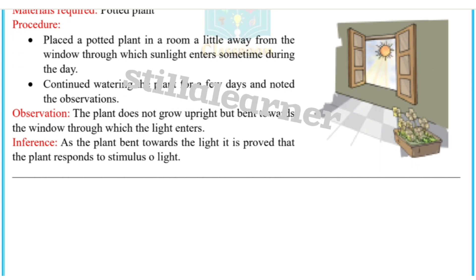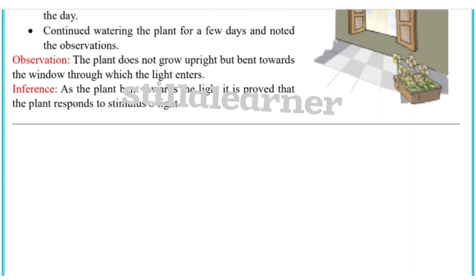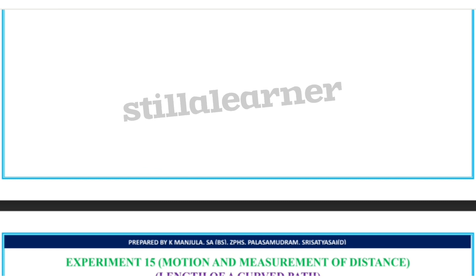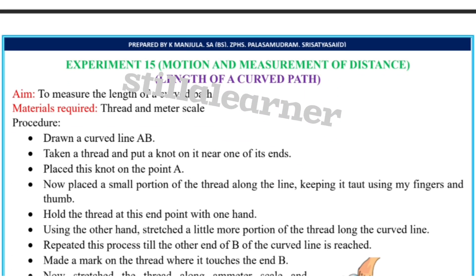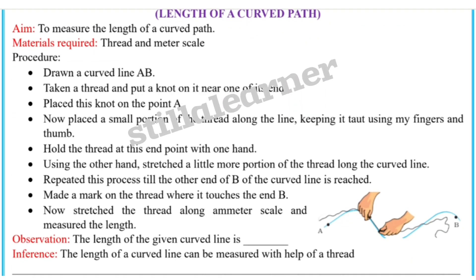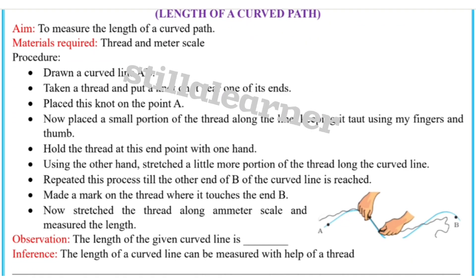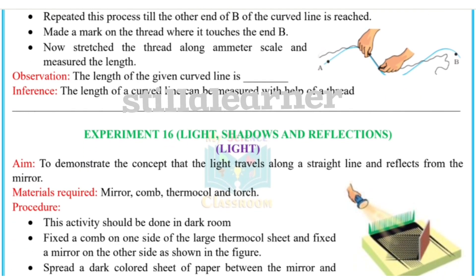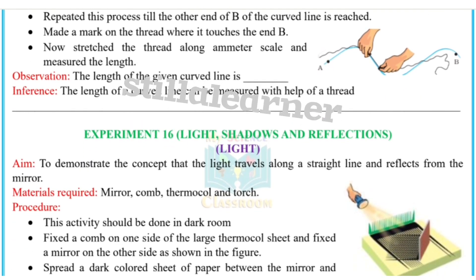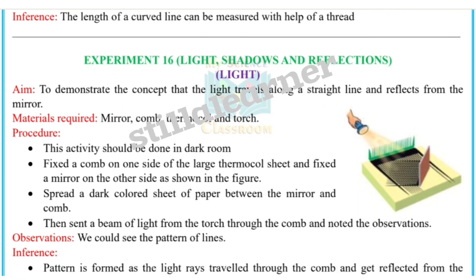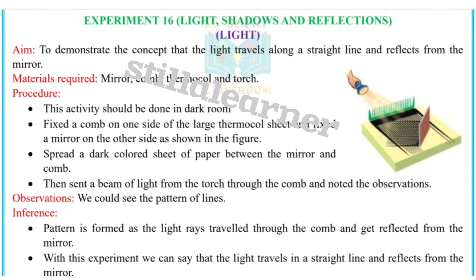Experiment 14 is characteristics and habitats — response to light. Experiment 15 is motion and measurement of distance — length of a curved path.